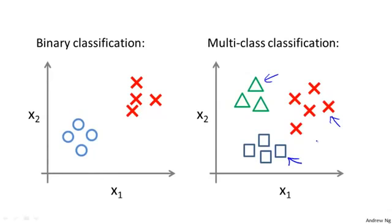We already know how to do binary classification. Using logistic regression, we know how to maybe fit a straight line to separate the positive and negative classes. Using an idea called one-versus-all classification, we can then take this and make it work for multi-class classification as well.